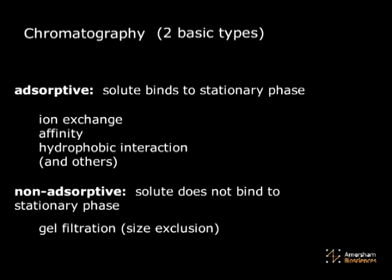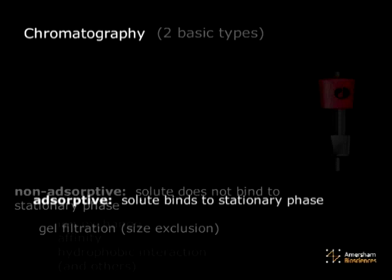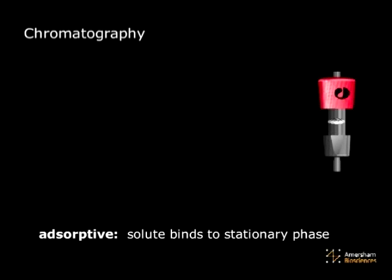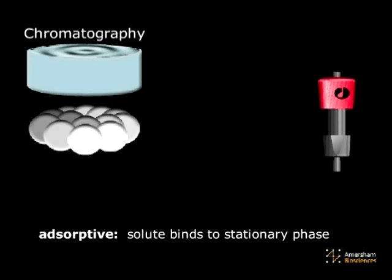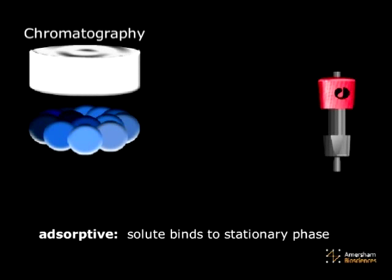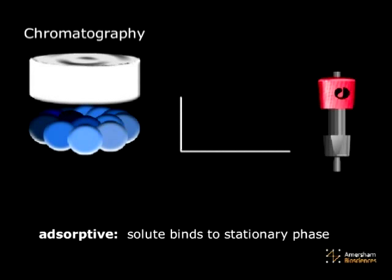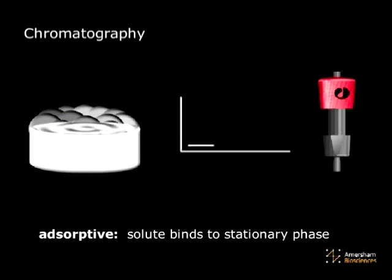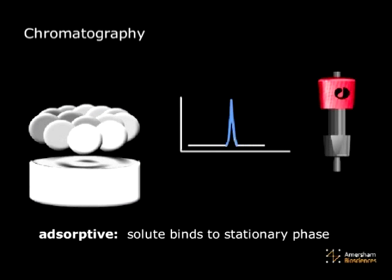Gel filtration, also referred to as size exclusion, is an example of non-adsorptive chromatography. Each technique requires a distinct type of column. In adsorptive chromatography, like ion exchange for example, molecules bind to the media and are released with a change in the buffer composition. Molecules are eluted based on differences in electrostatic and hydrophobic properties or biological function.